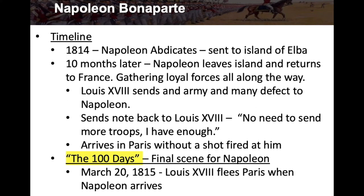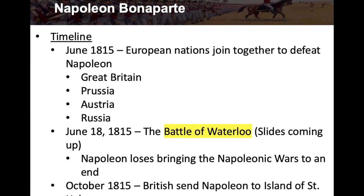We now enter the phase called the Hundred Days — the final scene for Napoleon. On March 20th, 1815, Louis the 18th fled Paris when Napoleon arrived. In June of 1815, European nations joined together to defeat Napoleon. An alliance of Great Britain, Prussia, Austria, and Russia was formed to stop him. On June 18th, 1815 was the Battle of Waterloo — Napoleon lost, bringing the Napoleonic Wars to an end.